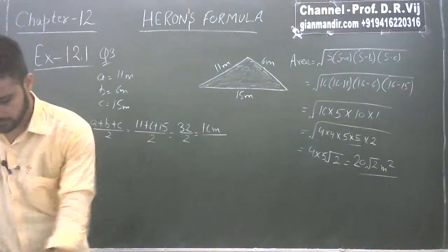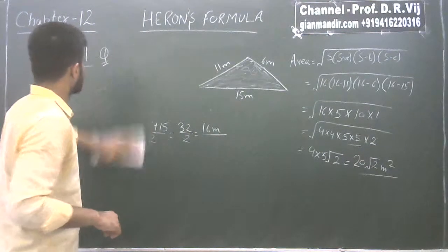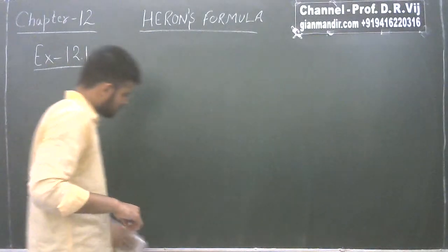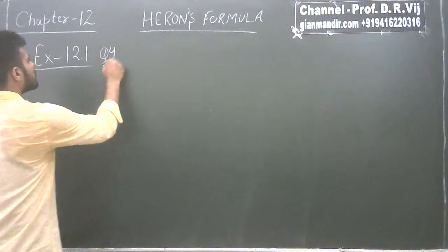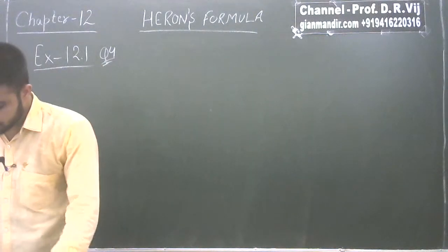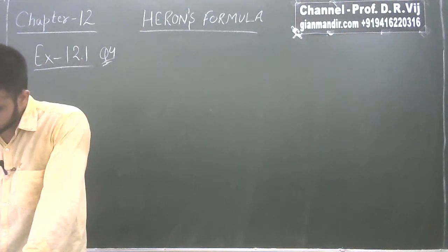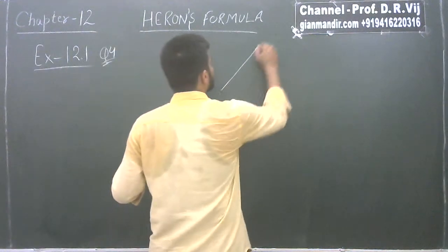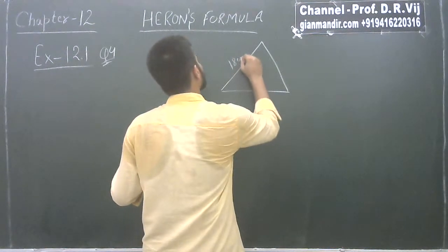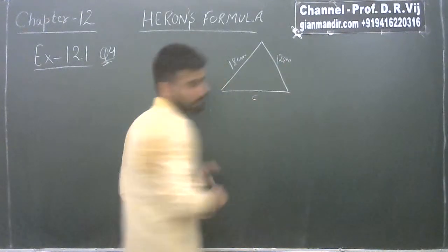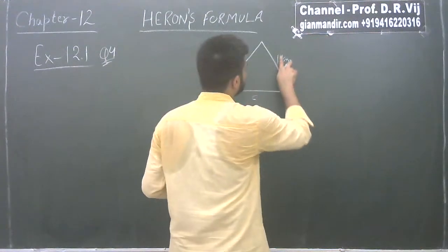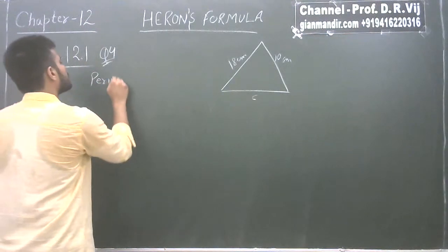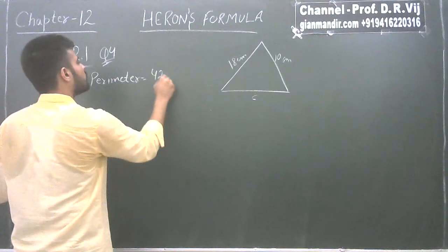Let's move on to question number 4. Find the area of a triangle, two sides of which are 18 centimeter and 10 centimeter, and the perimeter is 42 centimeter. The third side is not given to us — perimeter is given as 42 centimeter.